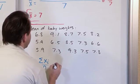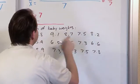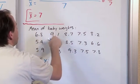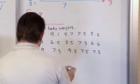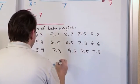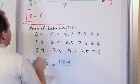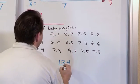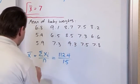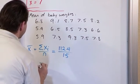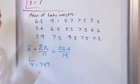So what I'm going to do is add up all of these things. If you go into a calculator and add all these things together, what you're going to get is 112.4. And then if you count these up, you're going to have 15 samples. And so what you'll get is 7.49. That is the sample mean.